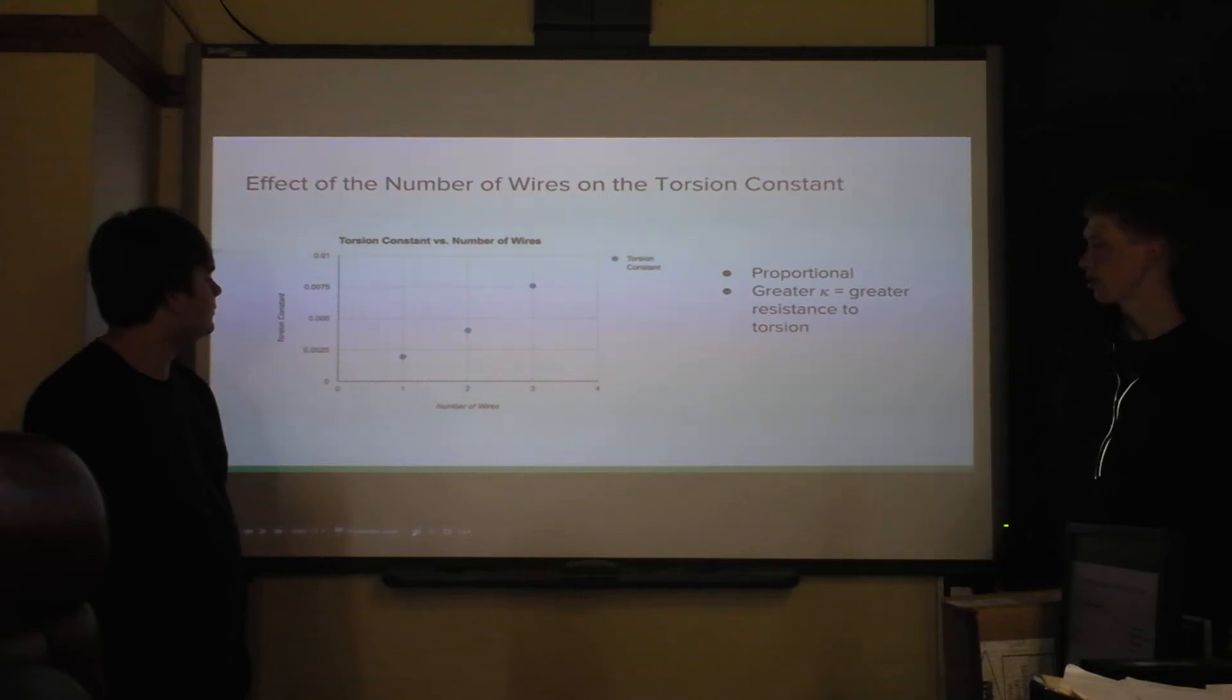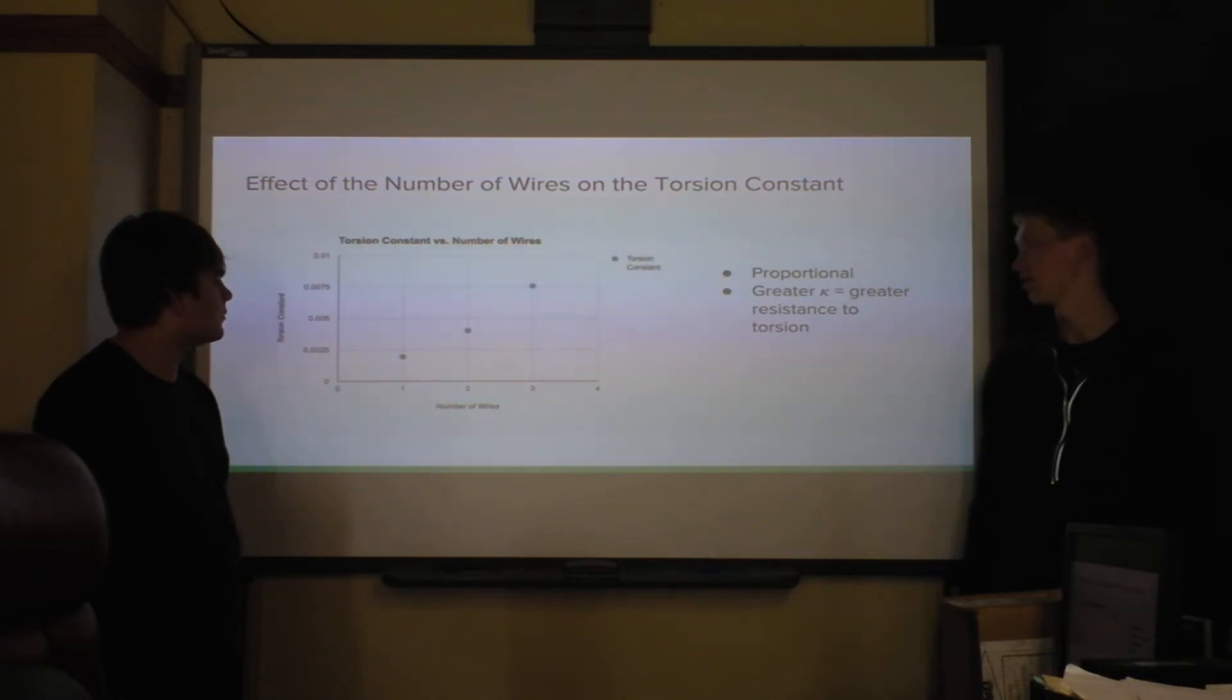And then you can see there was kind of like a linear relationship between the number of wires braided together and the torsion constant. And that just makes sense, because the more braided together, the more strength they should have.